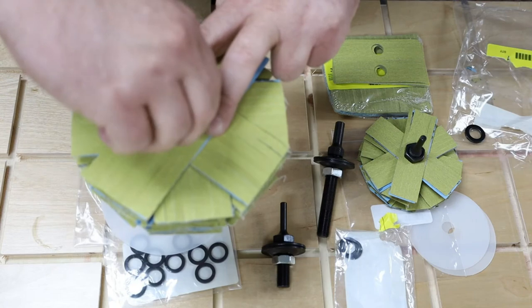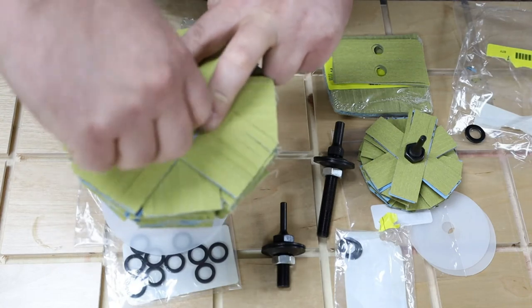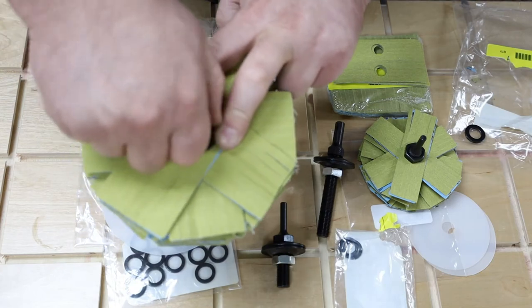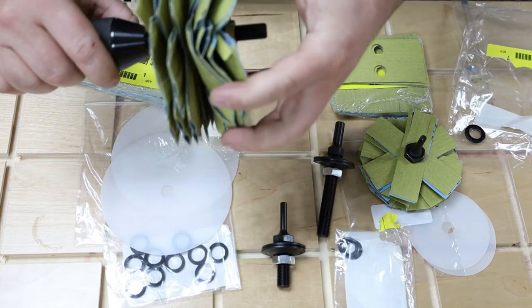And once you get that all snugged down you can take a wrench, pair of pliers, whatever you got and just finish that tensioning process. Now you do want to make sure that you're holding the strips in place because the last thing you want is to start having strips slide around.